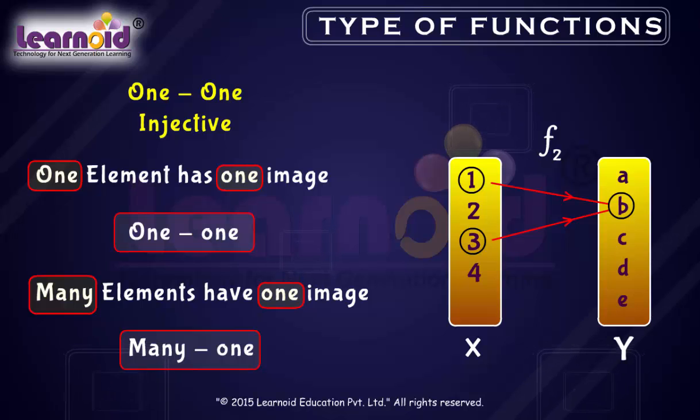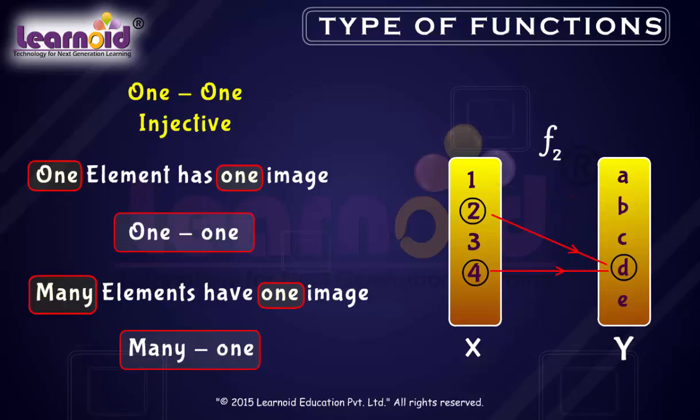Similarly, elements 2 and 4 have the same image d. f2(2) is equal to d.